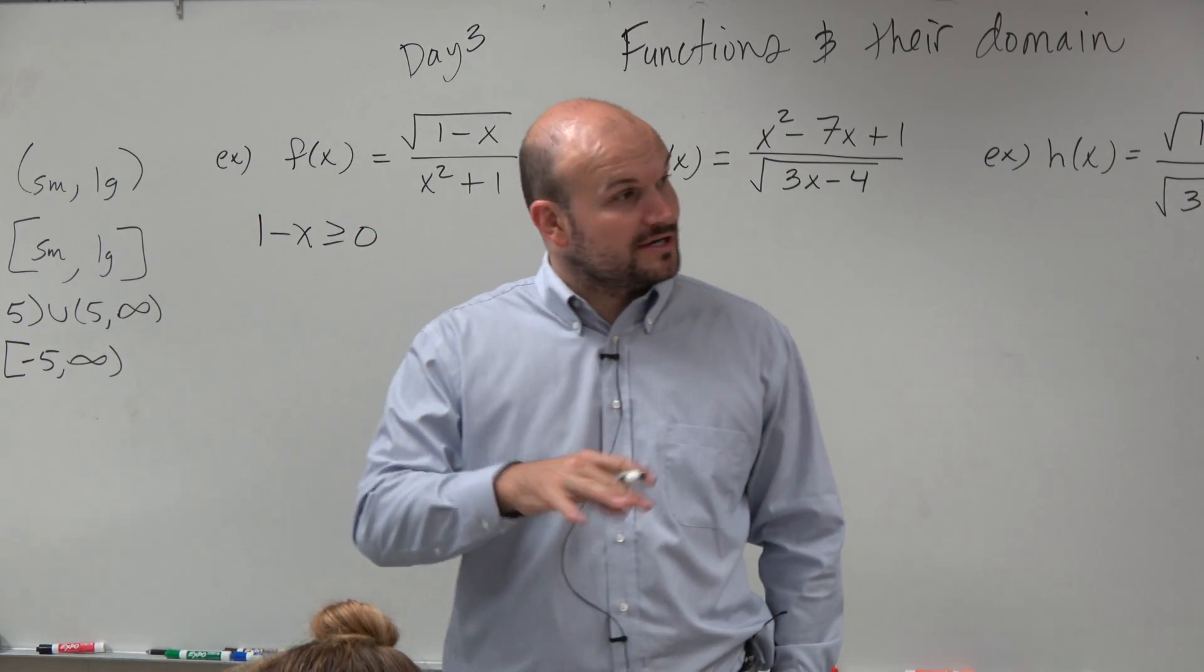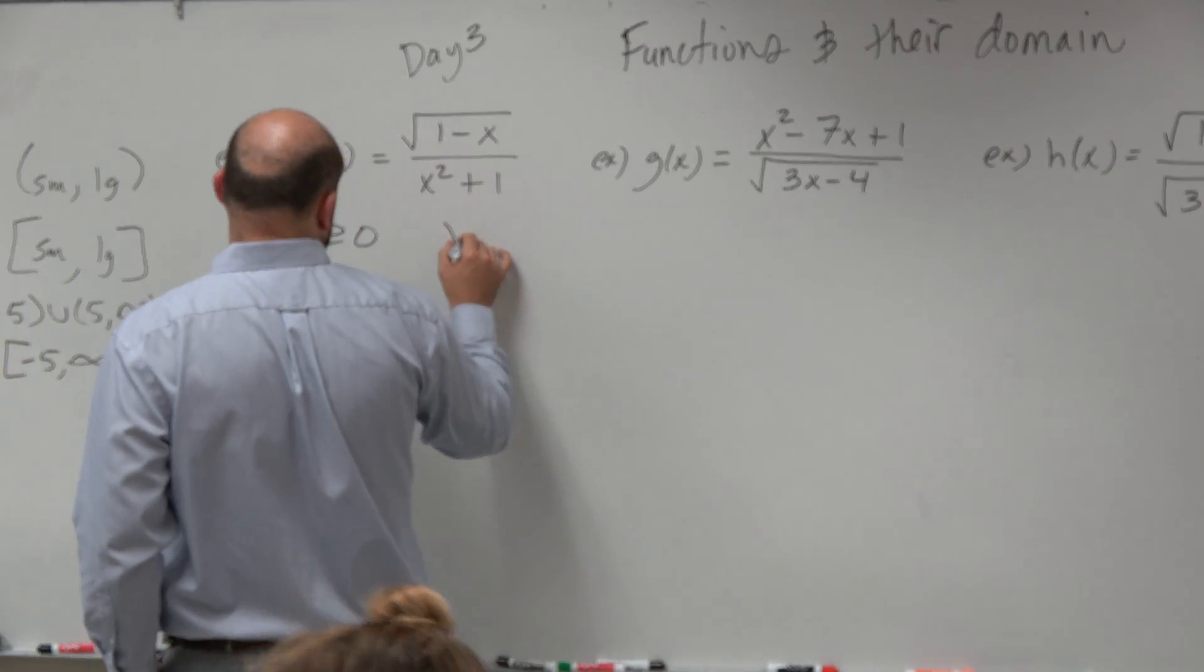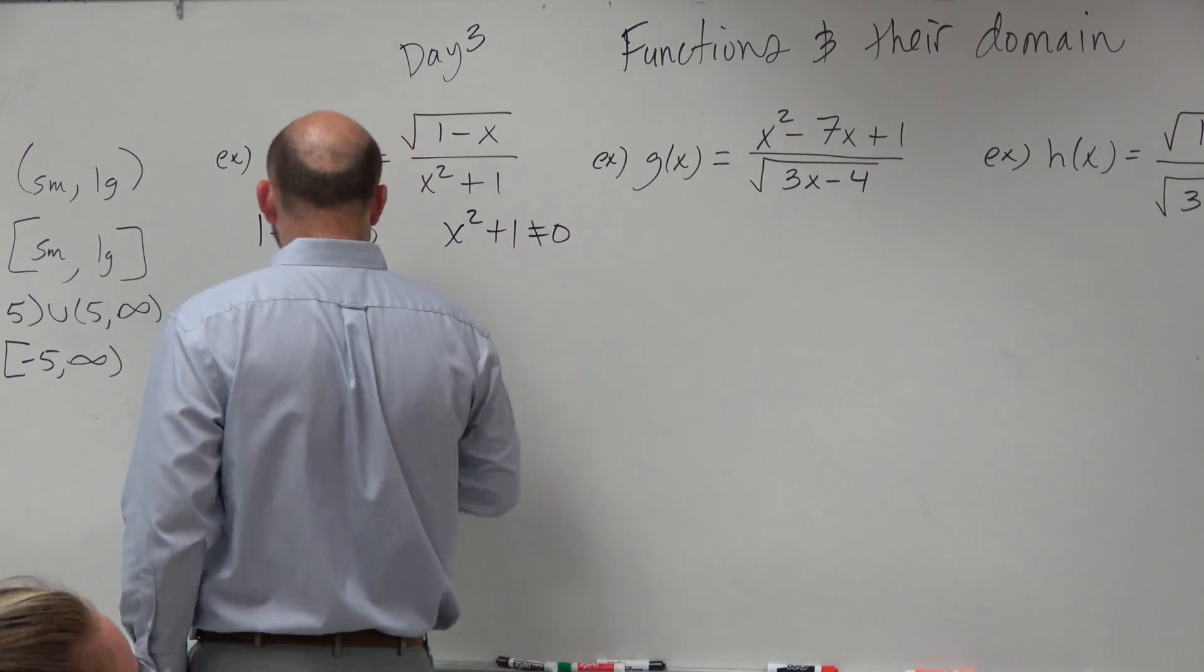The next thing is we see that we have a denominator, so we know that constraint number two, or restriction number two, is going to take effect.